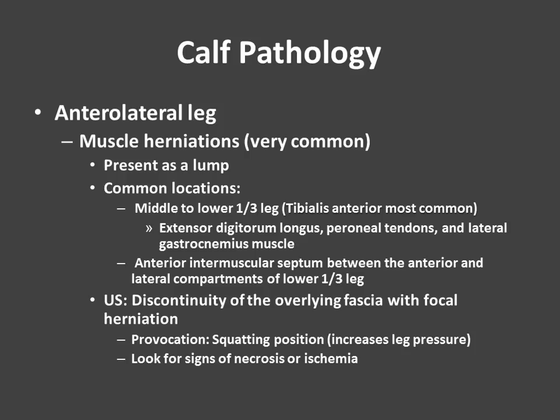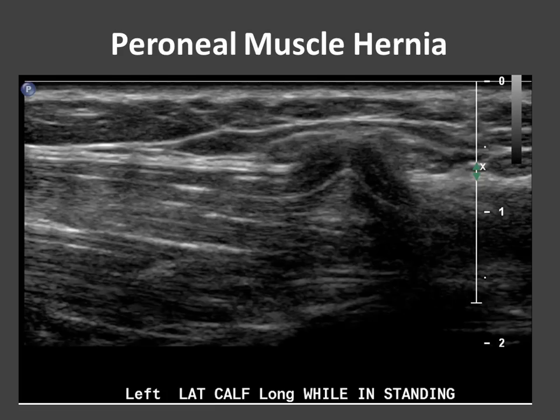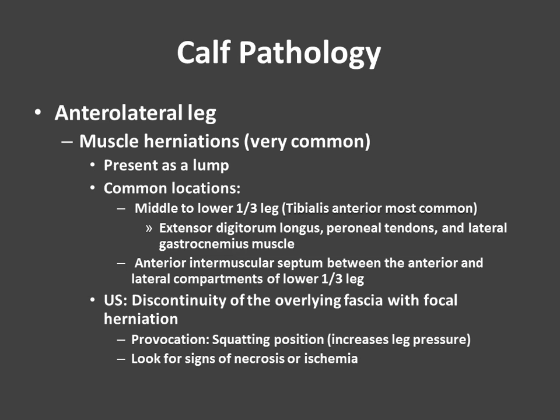Common things you can see in the calf: in the anterolateral leg, muscle herniations are very common. They'll often present as a lump. The common locations are in the middle to lower one-third of the leg, at the anterior intramuscular septum between the anterior and lateral compartments. Tibialis anterior tendons are the most common. On ultrasound, we'll see discontinuity of the overlying fascia with focal herniation. It may be important to place the patient in a provocative position — standing or squatting — to increase leg pressure, and then look for signs of necrosis or ischemia. Here I show a longitudinal image of the tibialis anterior with a focal discontinuity of the fascia and herniation of the muscle.